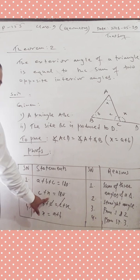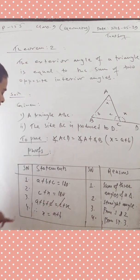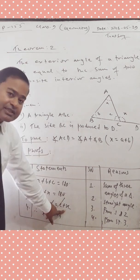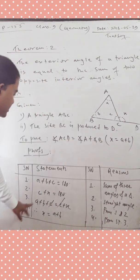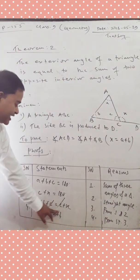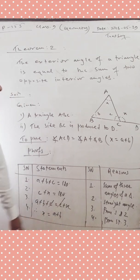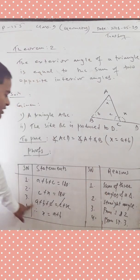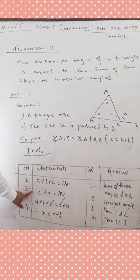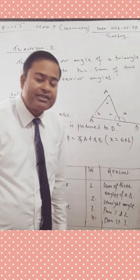In statement number 3, we combine statements 1 and 2. Since the right-hand sides of both are equal to 180 degrees, we write: A plus B plus C equals C plus X. Since C is a common angle, we cancel C from both sides. Therefore, X equals A plus B. The reason is: from statements 1 and 2, cancelling common angle C.